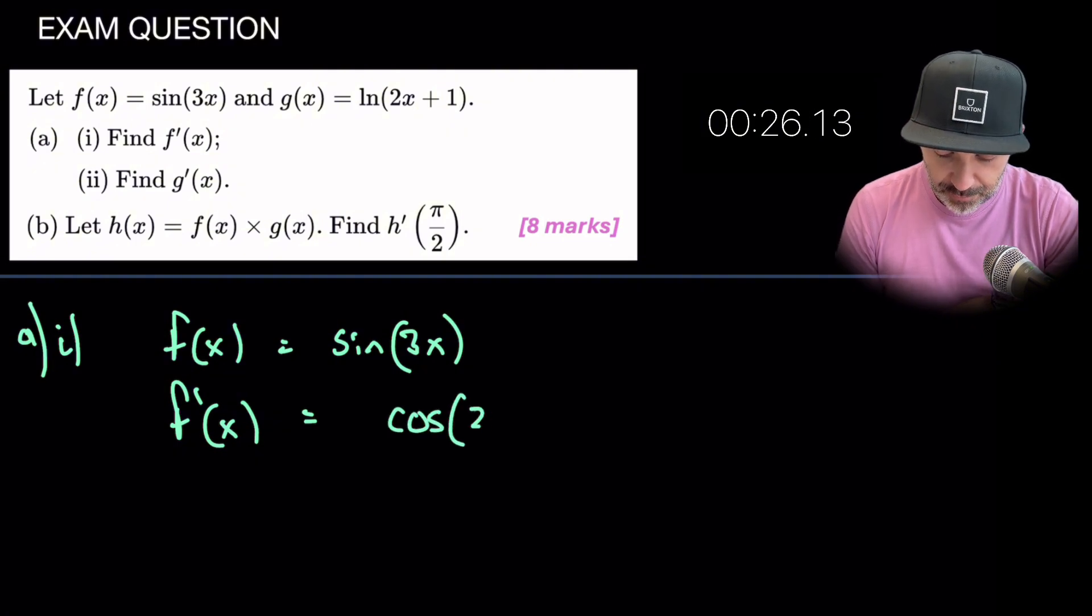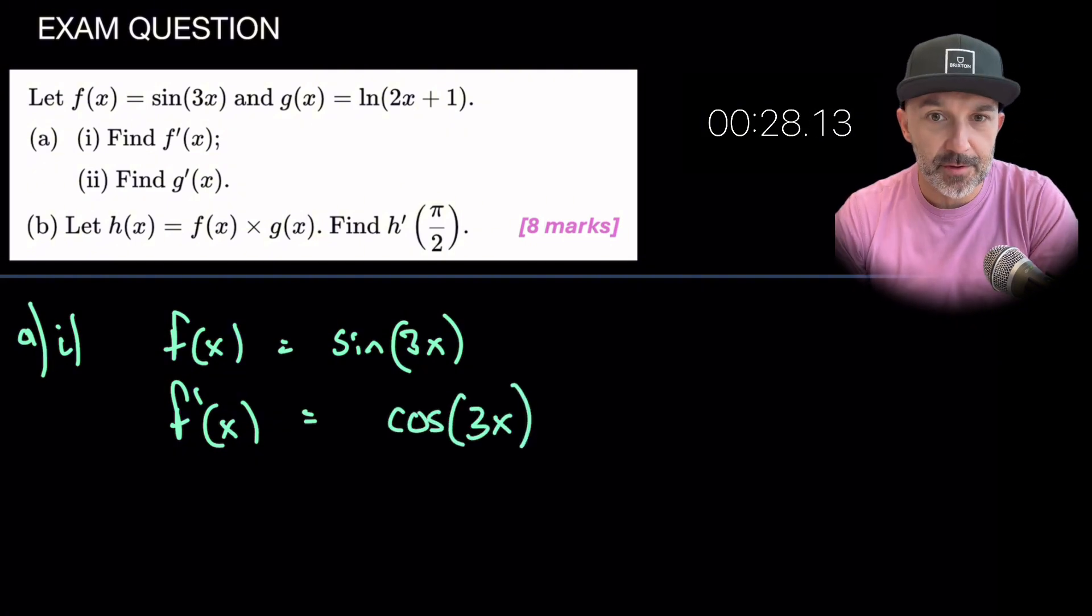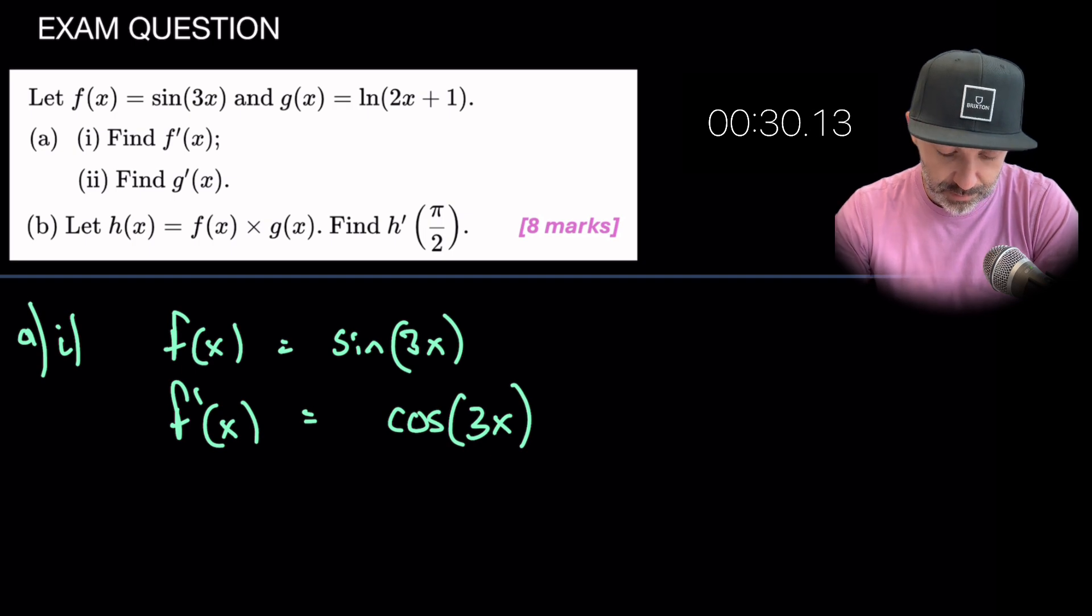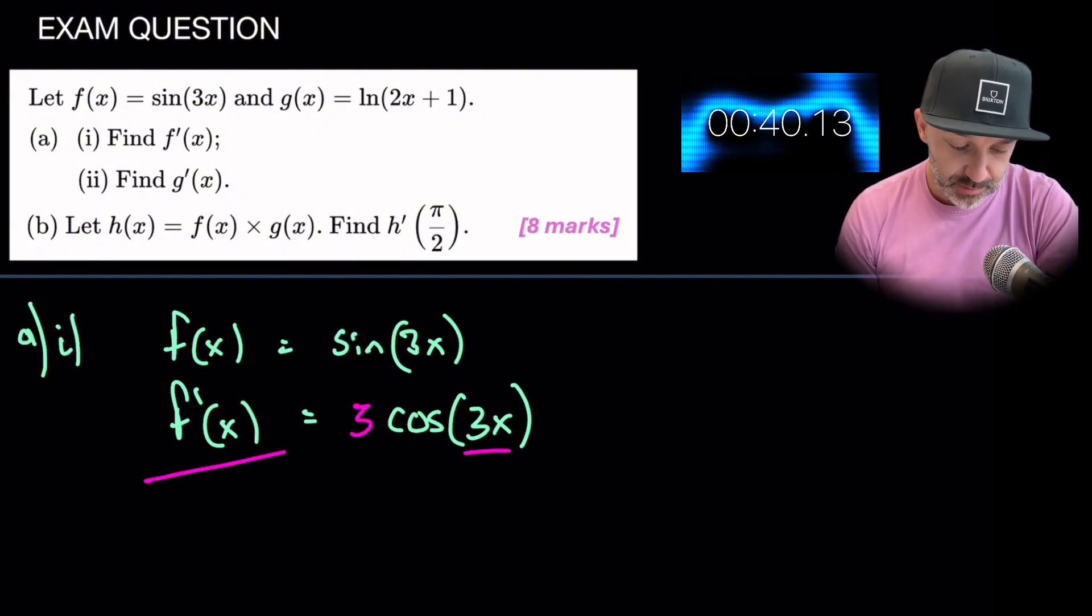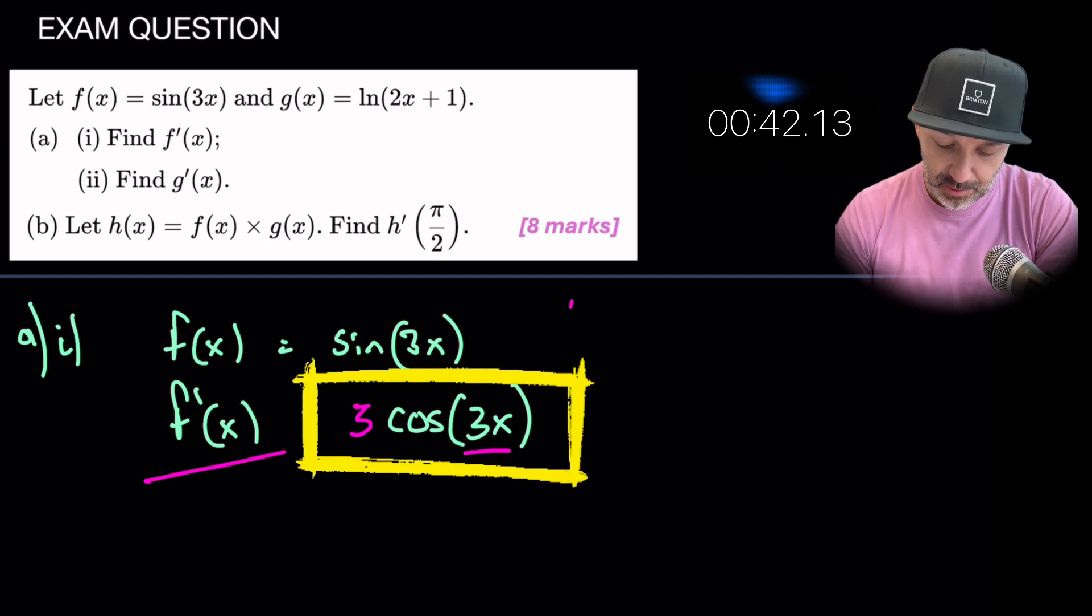So this would become cos. 3x stays exactly the same. We don't do anything with that. See my other video on derivative of sine function but what we must do is times through by the derivative of this bracket here and the derivative of that bracket is 3. So the answer to part one is 3 cos 3x.